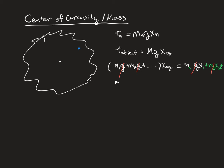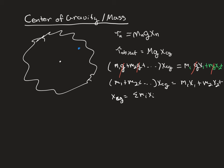But for a small object near the surface of the earth, g is not going to change, so we can cancel out g on both sides. Rearranging, we get that the center of mass or center of gravity equals the sum of each particle's mass times its position, summed over all particles, divided by the total mass of the system. You would have to do this for each dimension.